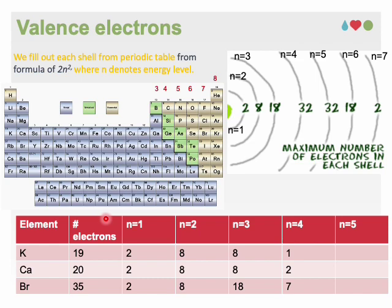This table shows the electron arrangements of potassium, calcium, and bromine with 1, 2, and 7 electrons in the outermost energy level.